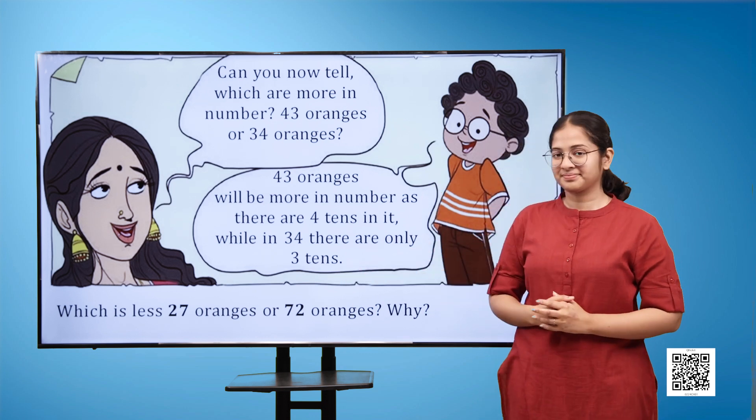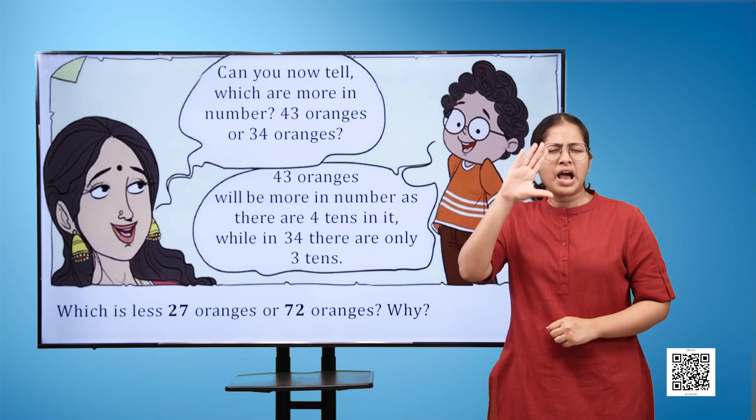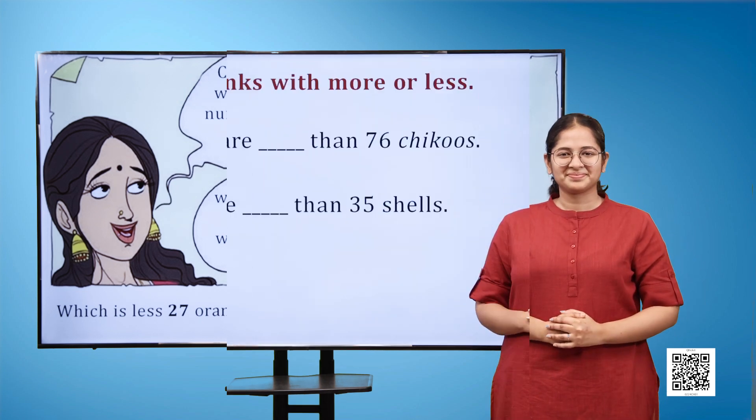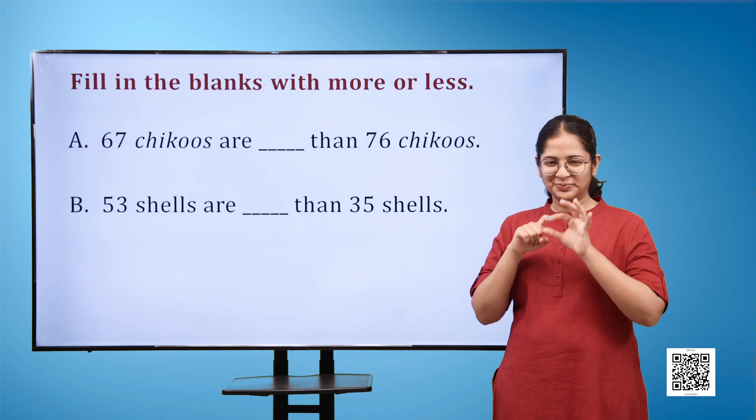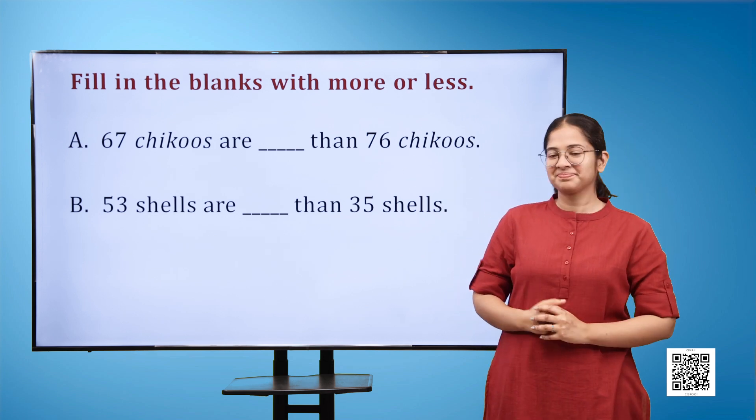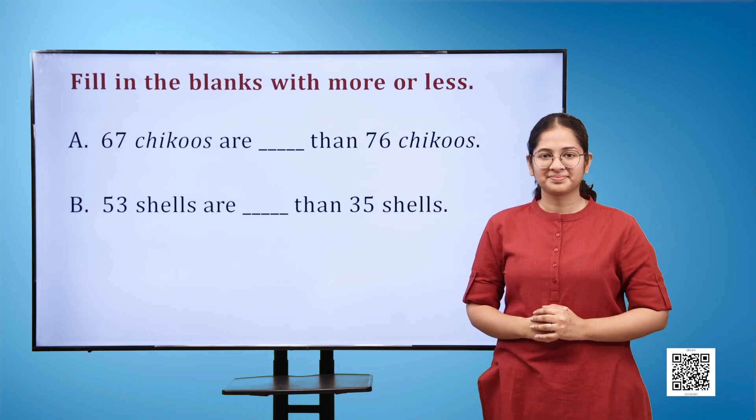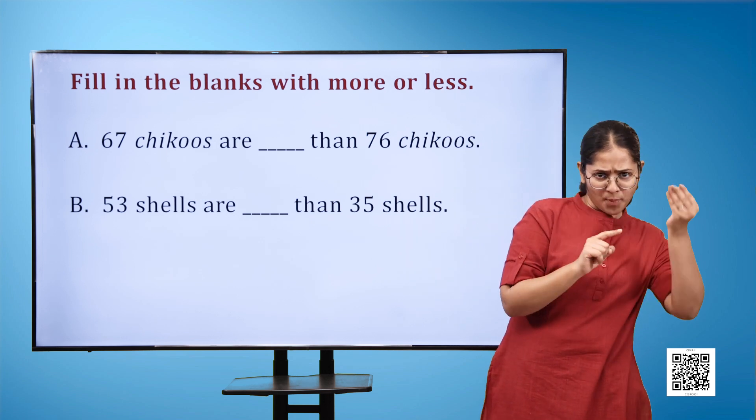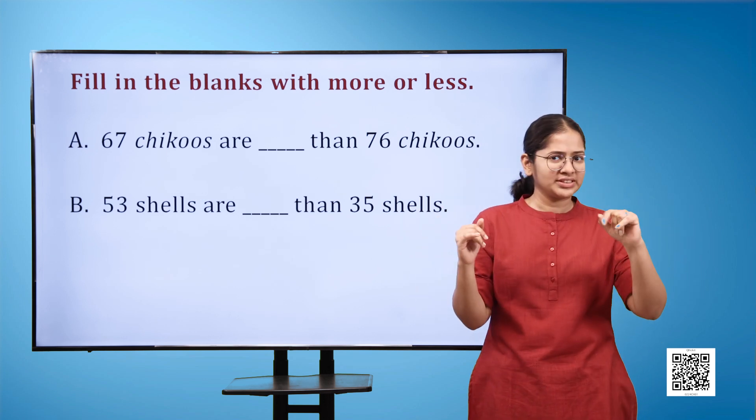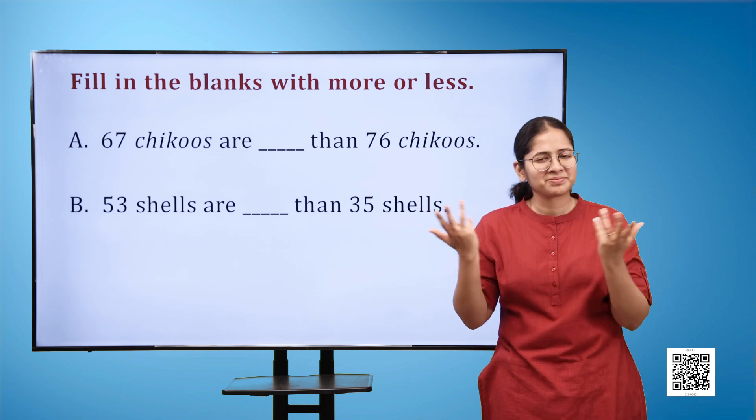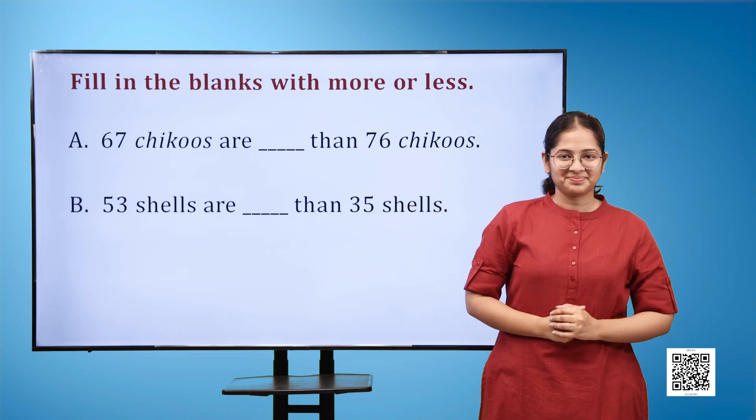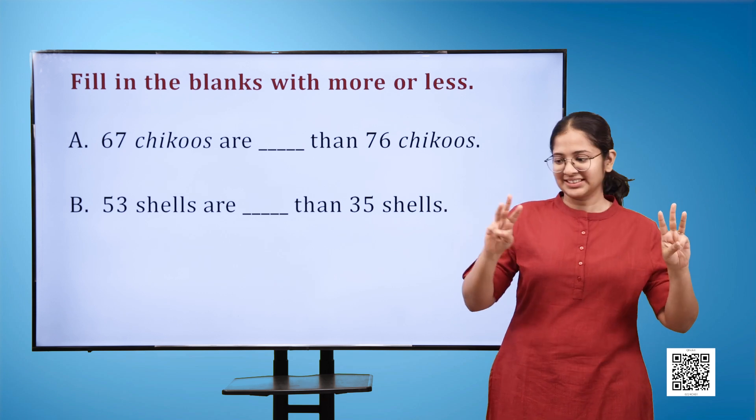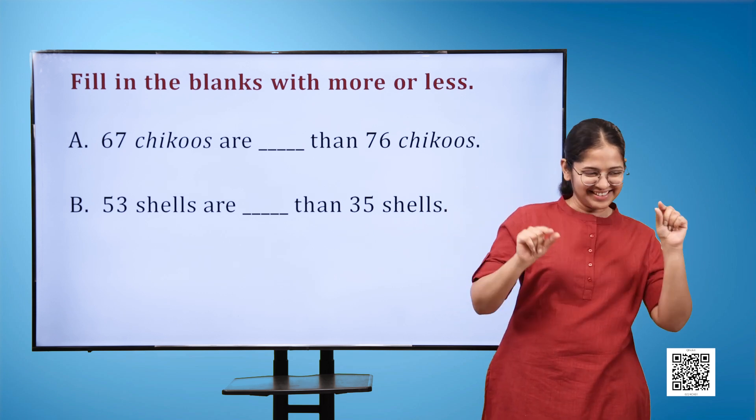Which is less, 27 oranges or 72 oranges, and why? Fill in the blanks with more or less: A) 67 chikus are blank then 76 chikus. Fill in the blanks with more or less: A) 53 shells are blank then 35 shells.